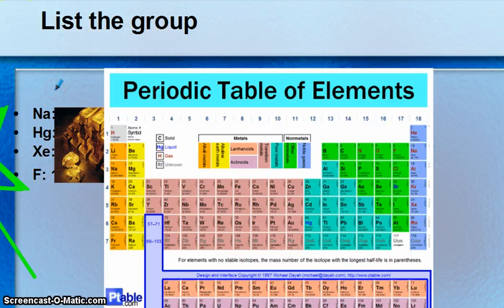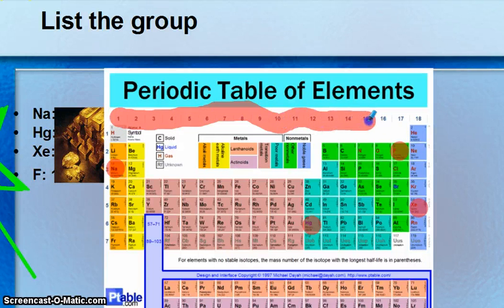Now, we're going to find the group. So for the first one, we're going to change PA to NA. So go ahead and change it to NA on your chart. And it's easy to find. You're just going to find the element. There's NA. HG, that's mercury. That's found right there. Xenon is found there. And F, fluorine, is found up here. So look across the top and you can easily find the group number or family number.